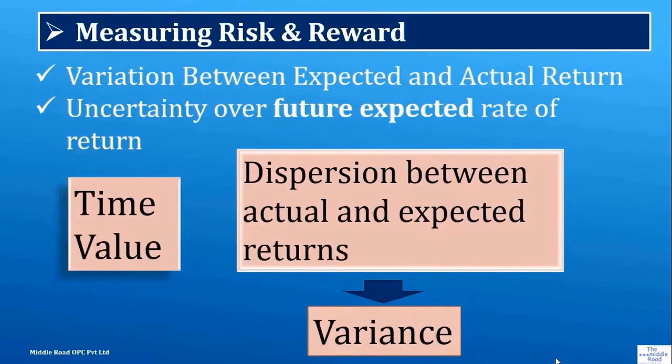We always talk about risk — what are we talking about when we say risk? Risk has got two components. One is time value: the more the time, the higher the time value, and time value adds into volatility. When we're talking about volatility, we're talking about dispersion between the actual and expected returns. We're talking about variance.